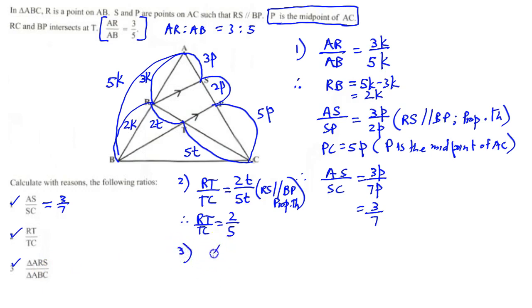So for number 3, let's write those 2 triangles down, triangle ARS, all over triangle ABC. Now let's look at triangle ARS. So if we use a different color, let's see ARS, there's here.